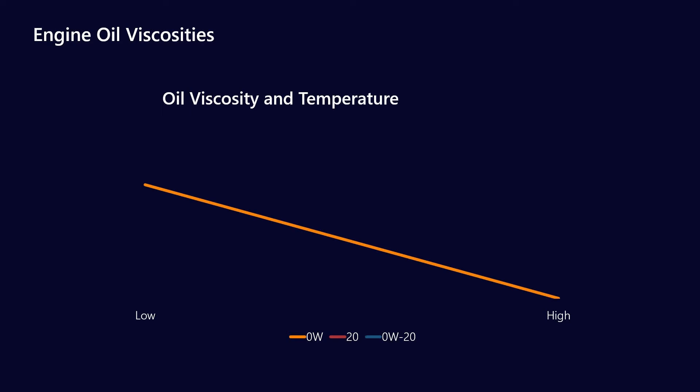Just like honey gets thin when you heat it up, same thing with oil. This is what a 0W monograde oil might look like and a 20 weight monograde oil will follow the same line but at a higher viscosity.